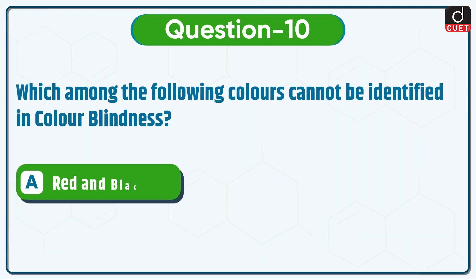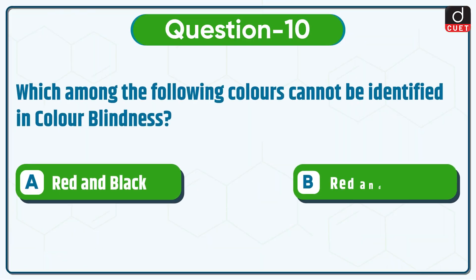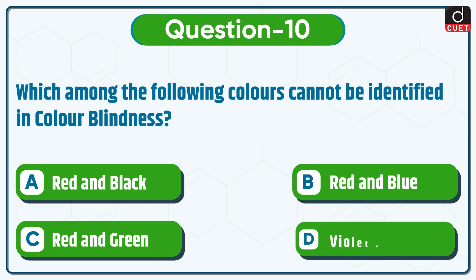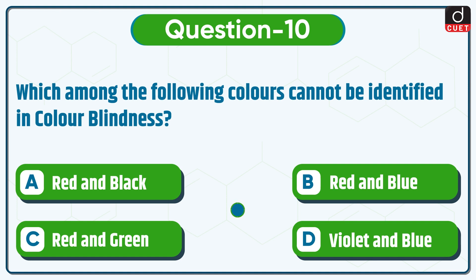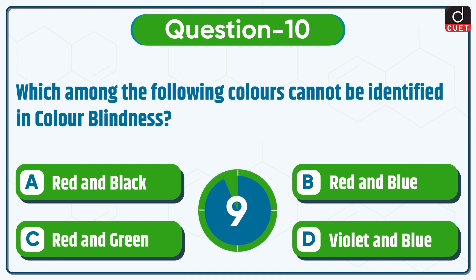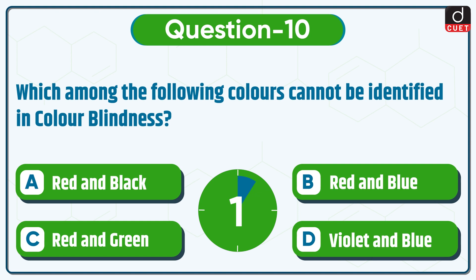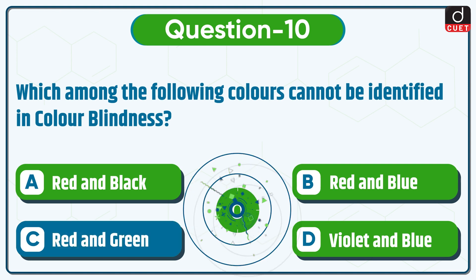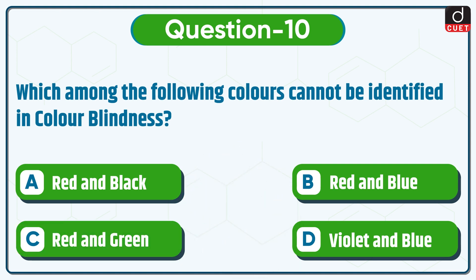Last question is: which among the following colors cannot be identified in color blindness? Red and black, red and blue, red and green, or violet and blue? The correct answer is option C, red and green.